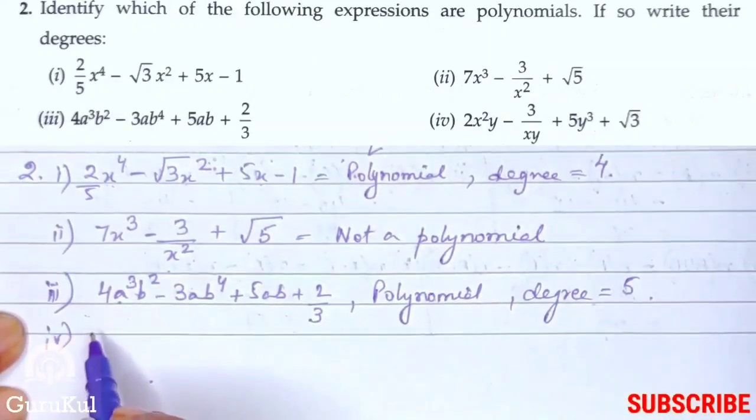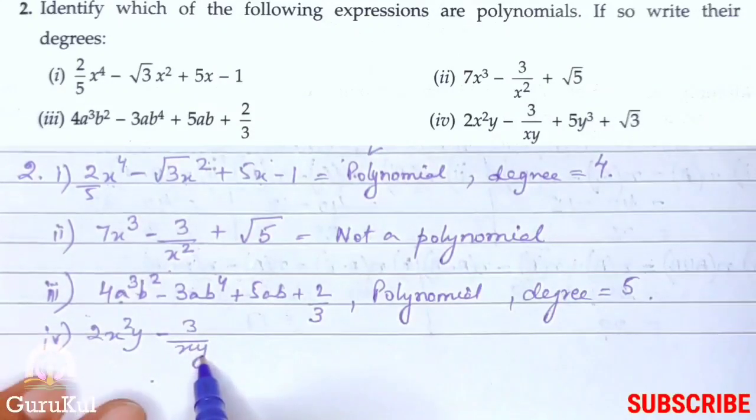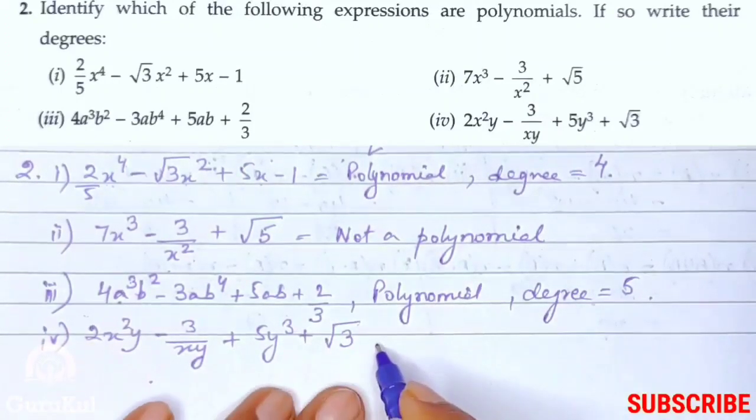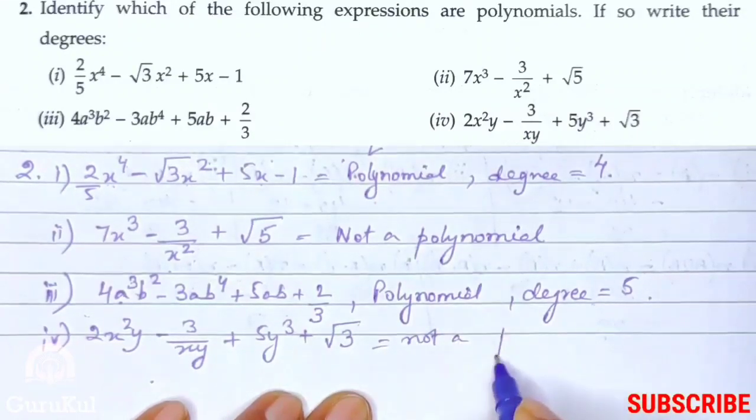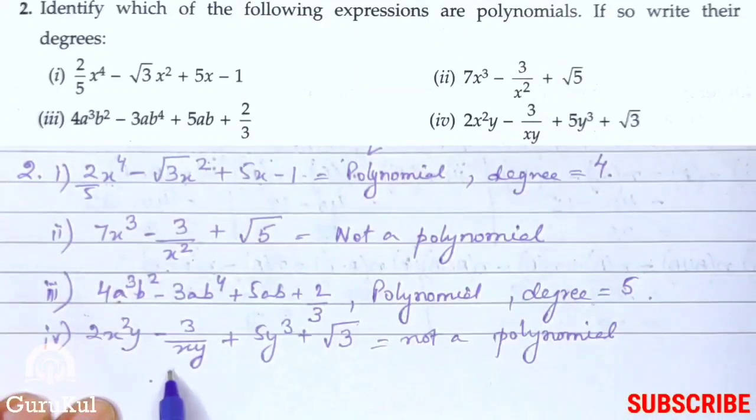Fourth one. Two x square y minus three by xy plus five y cube plus square root of three. This is not a polynomial. Any guess why? Very easy. Because in the denominator here there is a literal which is xy. So, this does not qualify to be a polynomial.